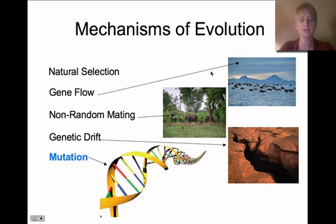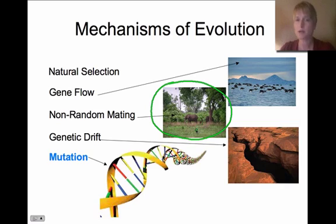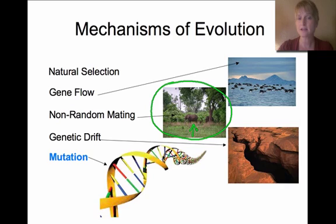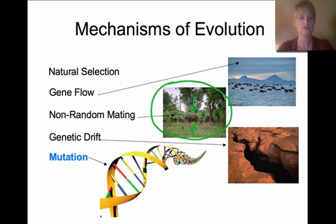Another mechanism is non-random mating. In a stable population, mating is essentially random because individuals have a large selection to choose from. In non-random mating, maybe there's only one male left in the population, so females only have that male to choose from. That male's genetics are what get passed along, reducing variation and changing the genetics of the population.